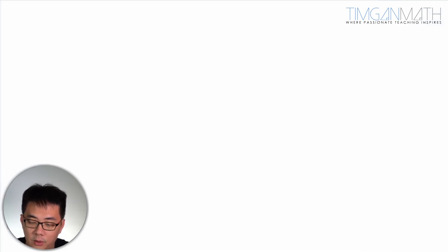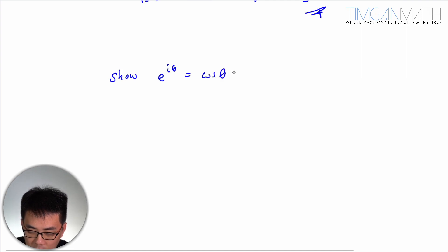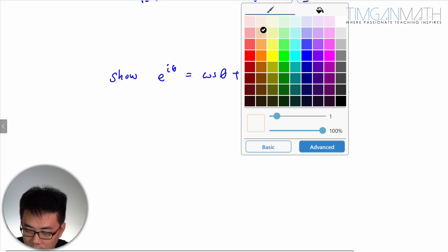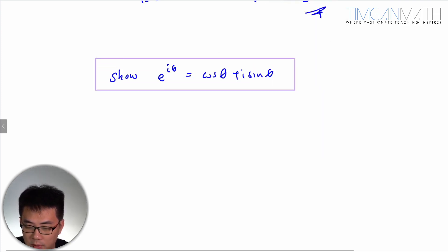Okay, this recap I'm going to go through this one here. How do you show e^(iθ) equals cosine θ plus i sine θ? This is an additional topic I think I need to go through because some questions will require you to do this, like they will ask you to show.